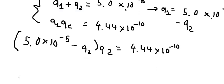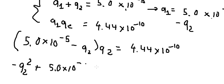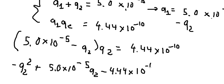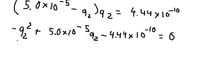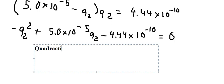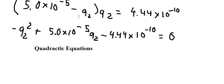After substituting, we get negative charge number two squared, plus 5.0 times 10 to the power of negative 5, times charge number two, squared, minus 4.44 multiplied by 10 to the power of negative 10, equals zero. This is a quadratic equation, so we can find two solutions for charge number two.